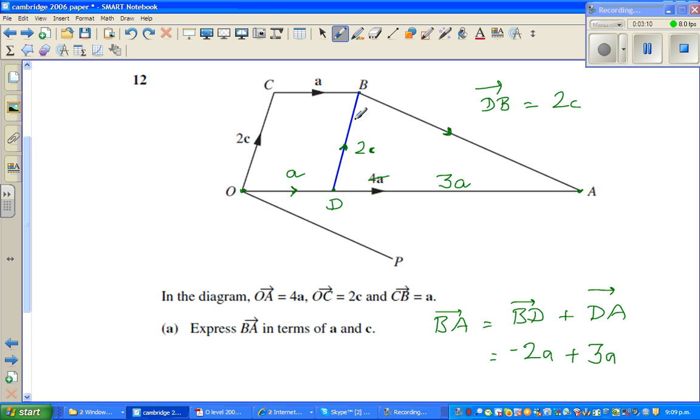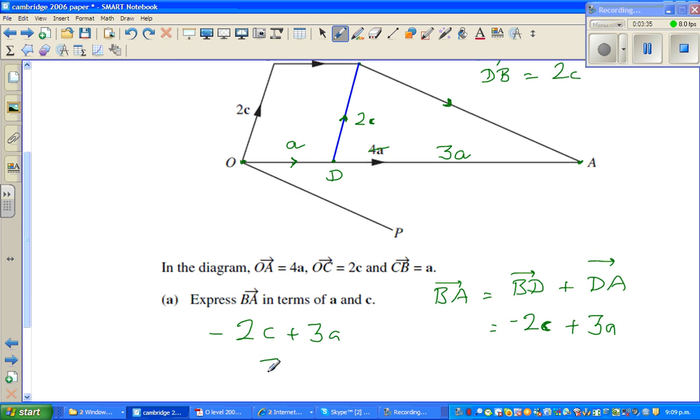So BA is BD plus DA. The answer is minus 2c plus 3a, which is writing with respect to a, starting with positive, that is 3a minus 2c.